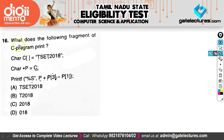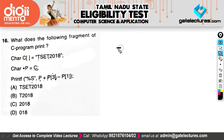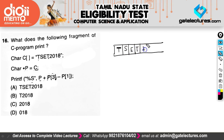Here we have another pointer question in C. They have given a character array and a pointer pointing to it, and we have to find the output. The character array contains: T, S, E, T, 2, 0, 1, 8. A pointer P is assigned to point to it. If the base address is 100, then P stores 100, pointing to the starting address. Subsequent characters are at 101, 102, 103, 104, 105, 106, 107.